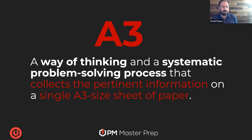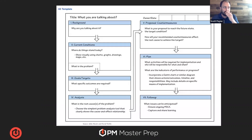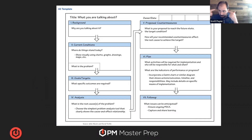So A3 is just a way of thinking and systematically solving a problem with constant evaluation, working with our people to say, 'This is what I see, and this is what you think.' They break it down. This is from Lean.org, the Lean folks. They're saying an A3 documents our thought process and distills it.